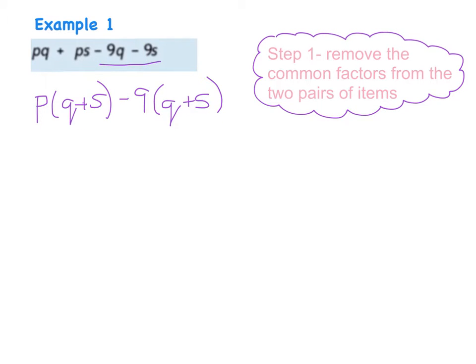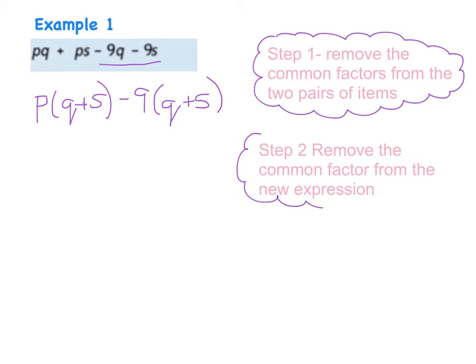So we get to this point here which is when we know we've done everything completely correct when we have two of the brackets that are identical. I then move on to step two and that is remove the common factor or factors from the new expression. So if I have a look at this I can see I now have p times q plus s minus 9 times q plus s.